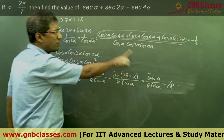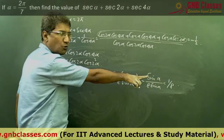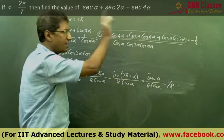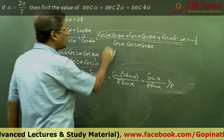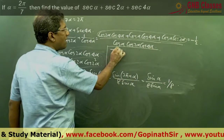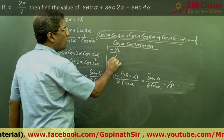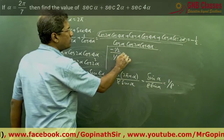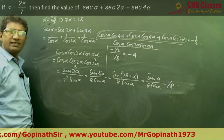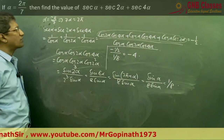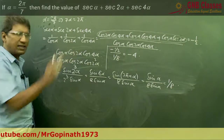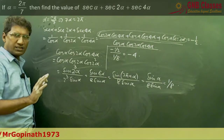The denominator is 1/8 and the numerator is −1/2. Therefore the required value is (−1/2) ÷ (1/8) = −4. So sec α + sec 2α + sec 4α = −4, where α = 2π/7. Have you understood this? Now let us take another problem based on this.